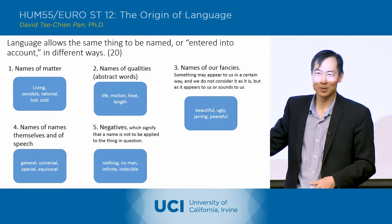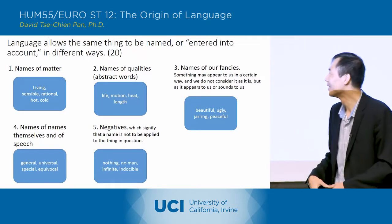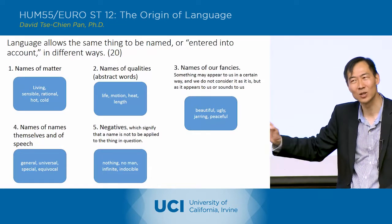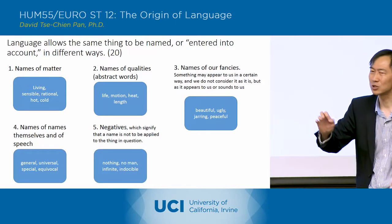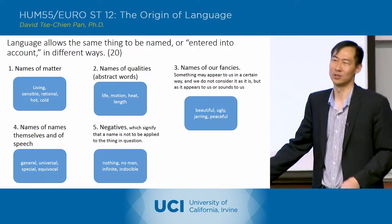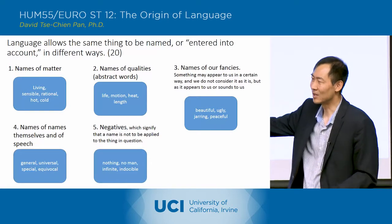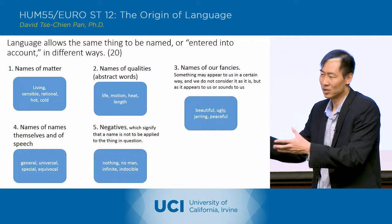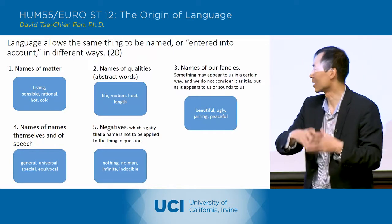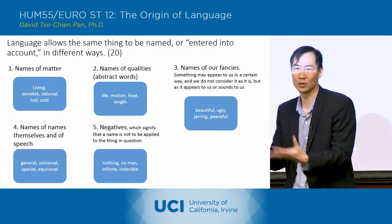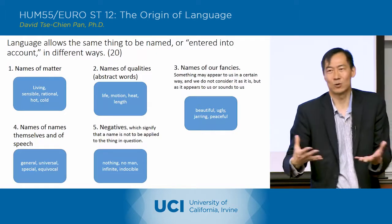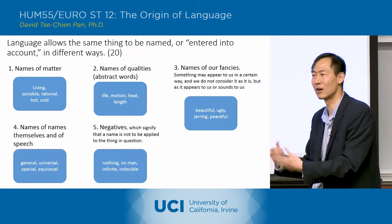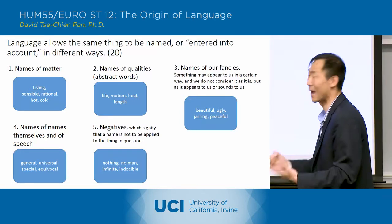Then he talks about names of names themselves — general, universal, special, equivocal. What he means is those are words that actually describe other words. They're categories of words where we take a set of words and put them in a certain category — universal words, special words, equivocal words. Language allows us to do that as well, creating a whole category of words about words.